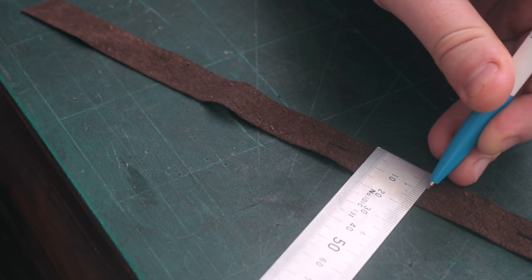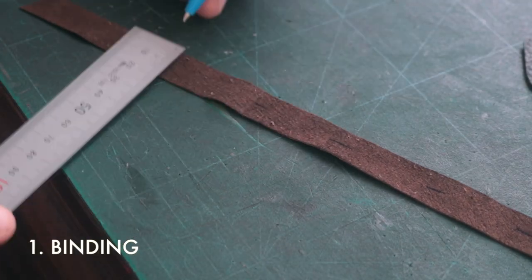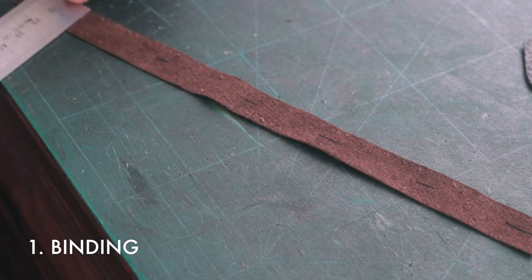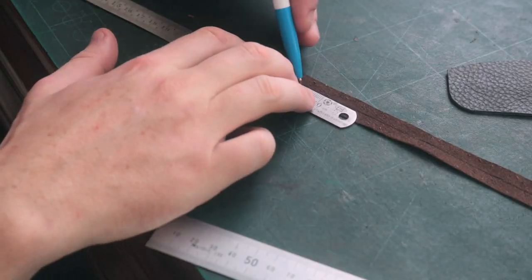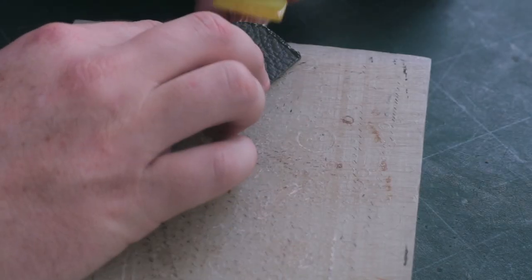Let's get started with the binded edge. For the binding, I am using a 16 millimeter leather stripe and I am tracing a line in the middle of it.